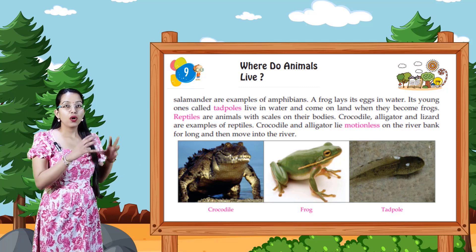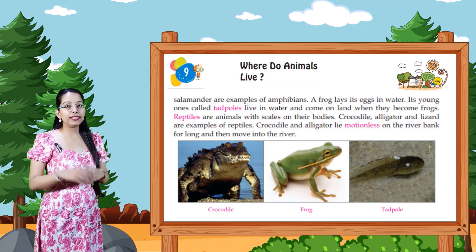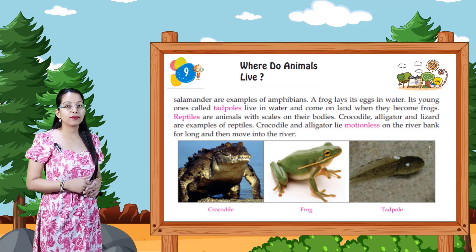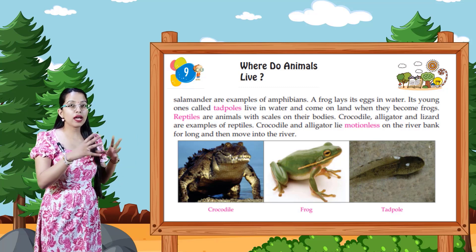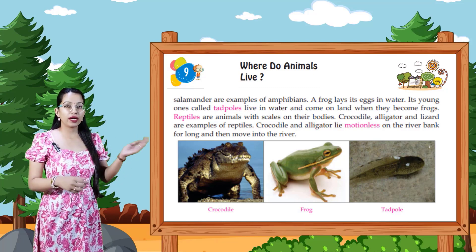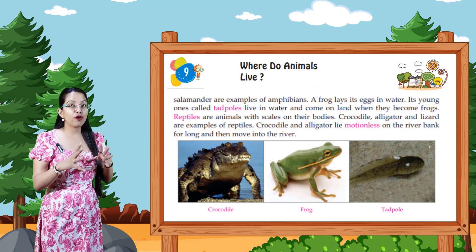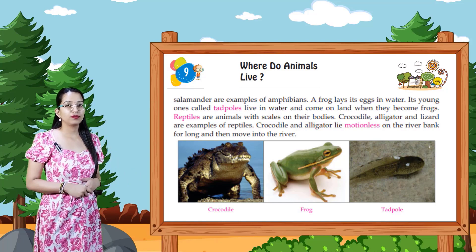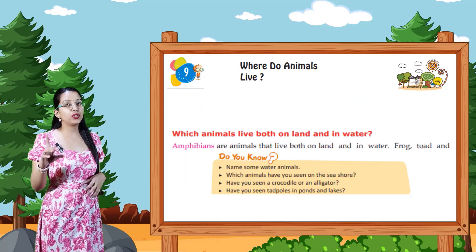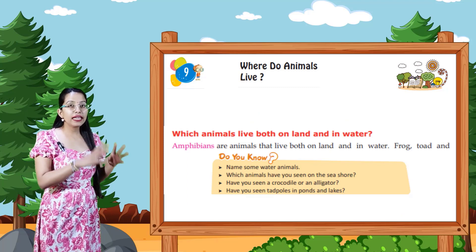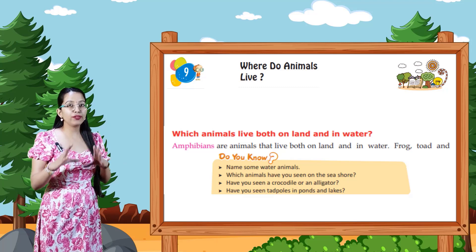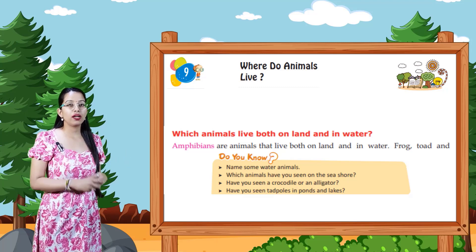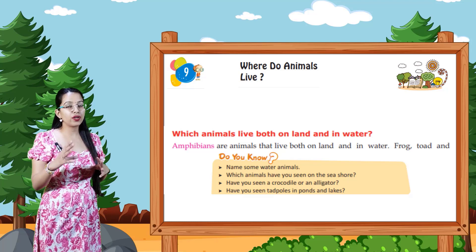Reptiles are animals with scales on their bodies. Crocodile, alligator, and lizard are examples of reptiles. Crocodiles and alligators lie motionless on the river bank for a long time and then move into the river. Look at the picture: crocodile, frog, tadpole. Do you know — can you name some water animals? Which animals have you seen on the sea shore?